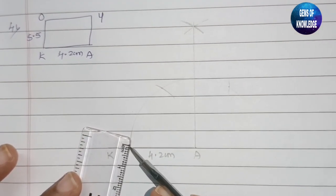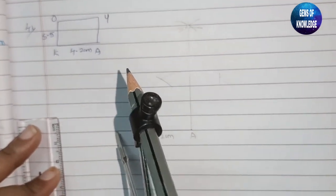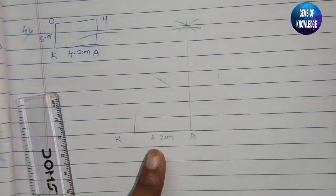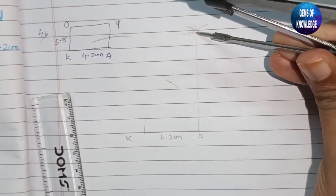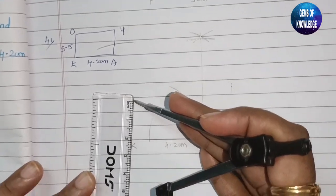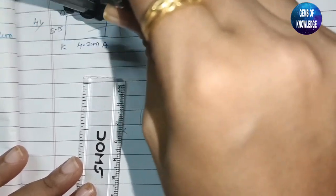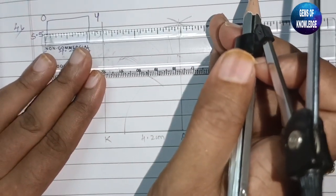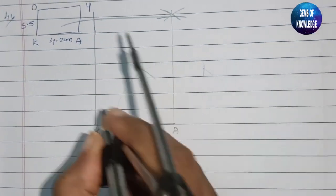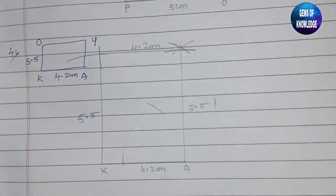Along the 90-degree line we take 5.5 centimeters. Since opposite sides are equal, the other side of 5.5 centimeters is placed by cutting arcs from both known points. Similarly, the side of 4.2 centimeters is taken from the appropriate vertex and the intersection gives the final vertex Y. Joining all points completes the parallelogram OKAY with sides 4.2 centimeters and 5.5 centimeters.